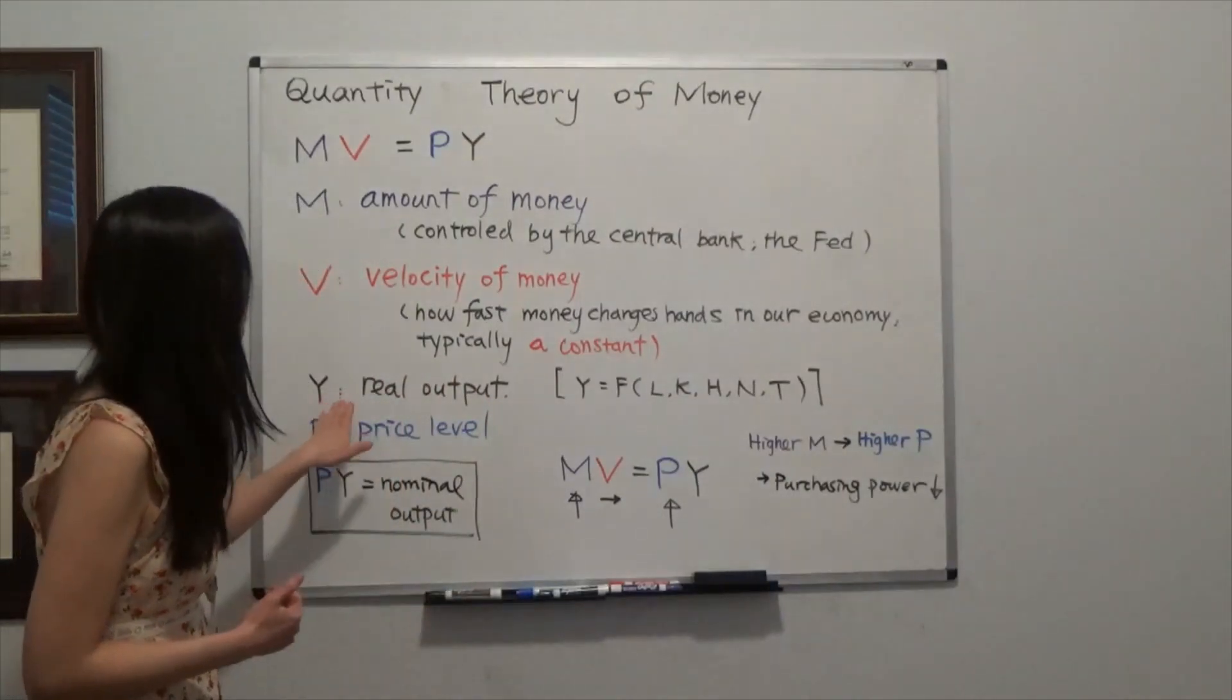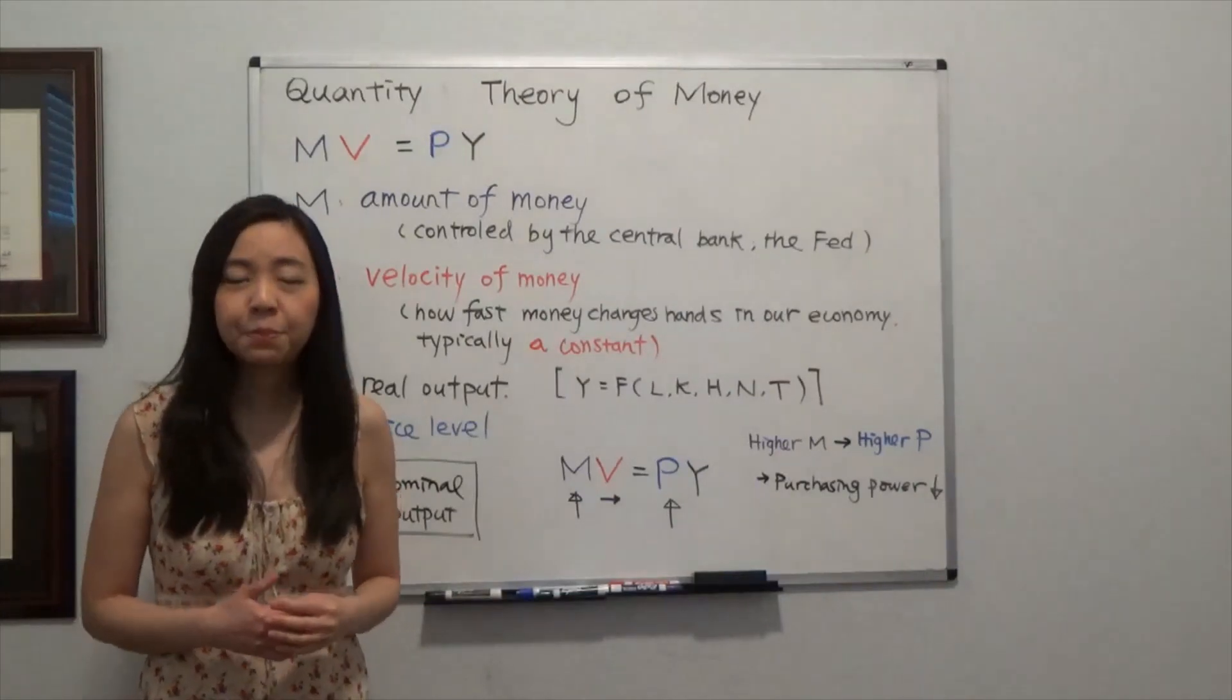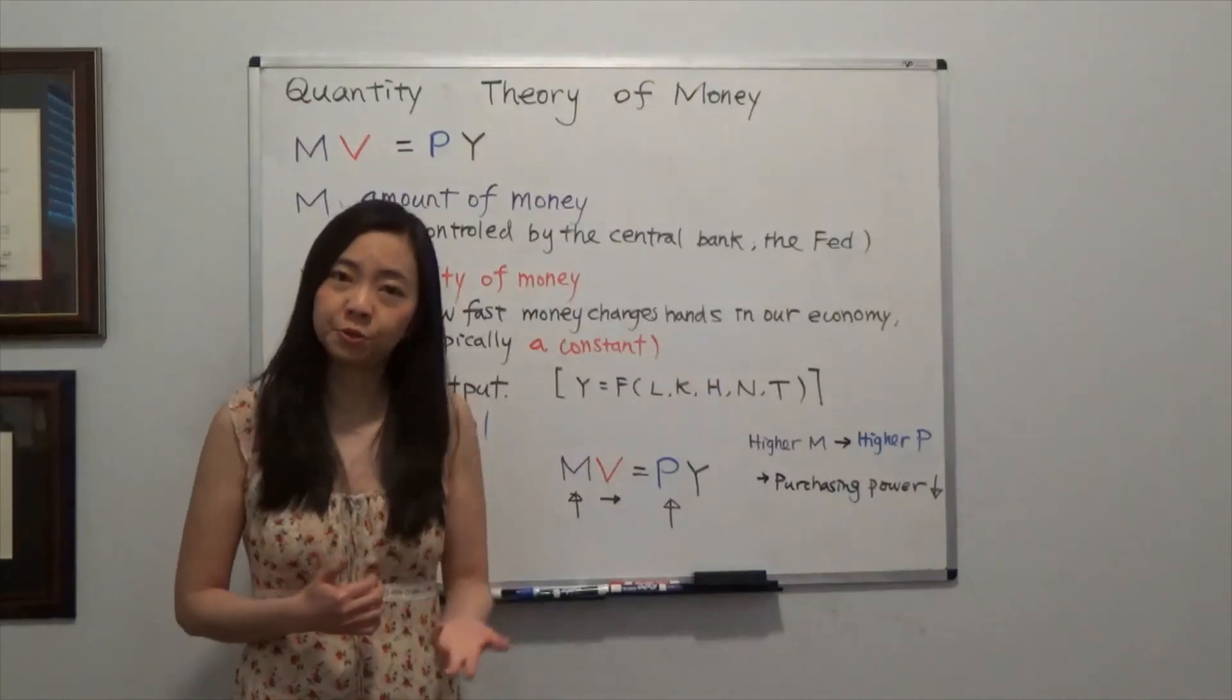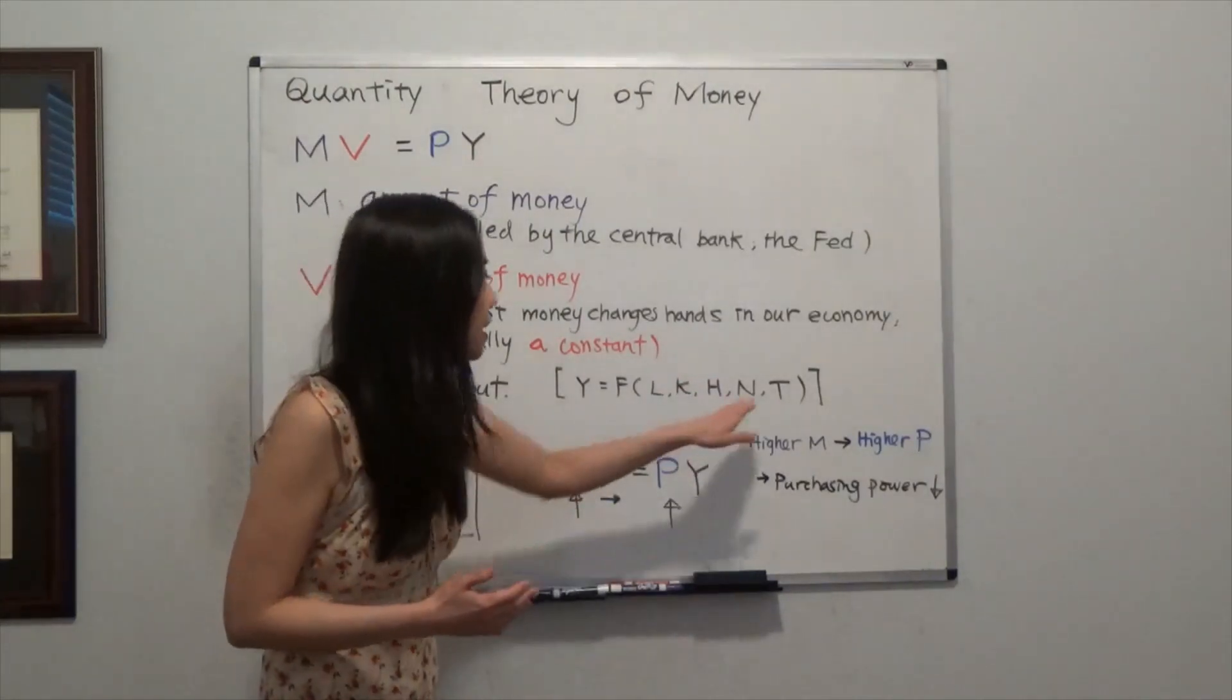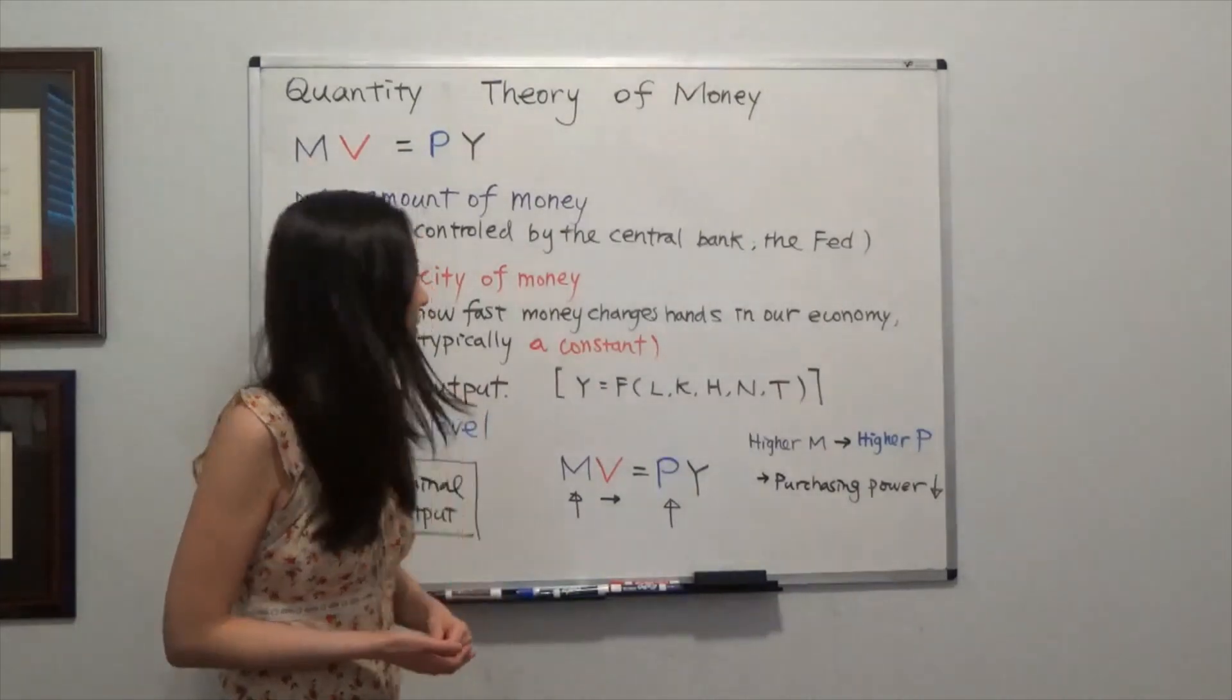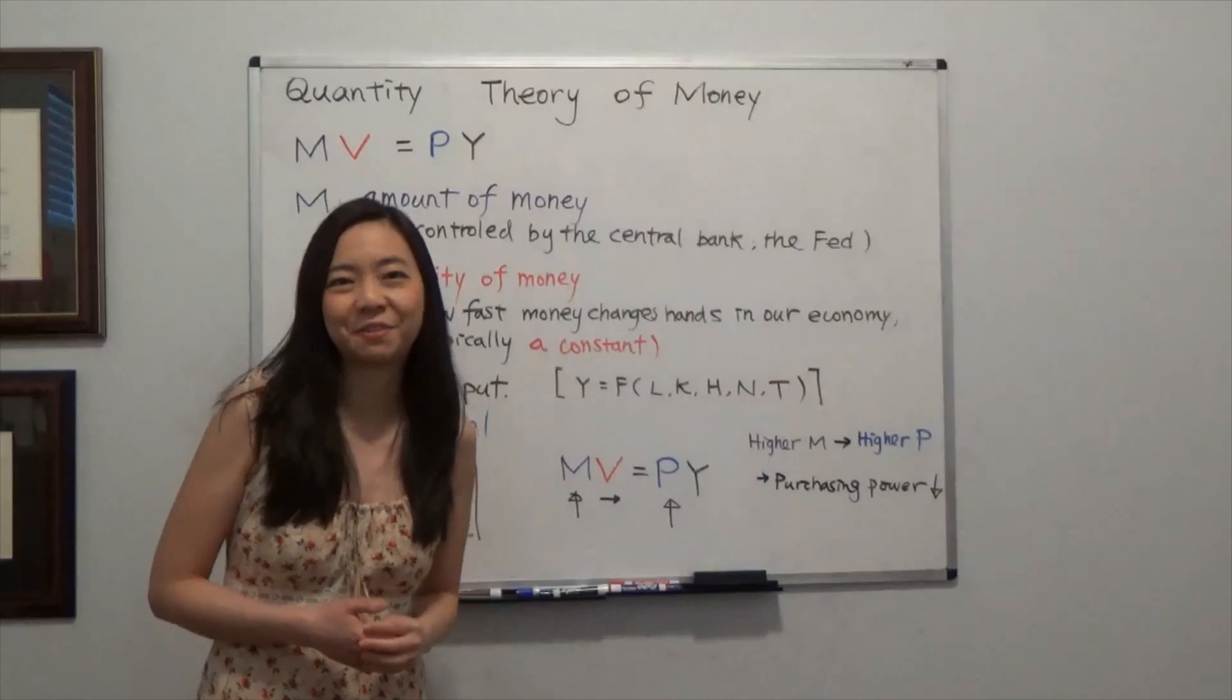Y is the real output or real GDP. The long-run output is a function of the resources we use to produce goods and services, as well as the technology available to produce goods and services. So you can see Y is not affected by the price level.